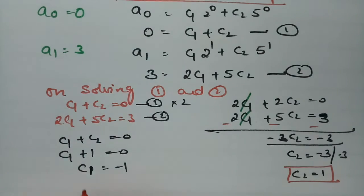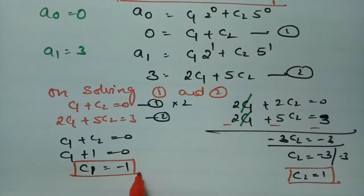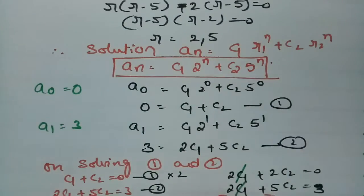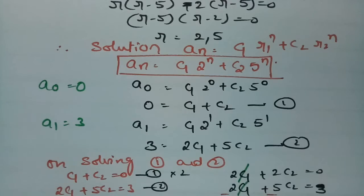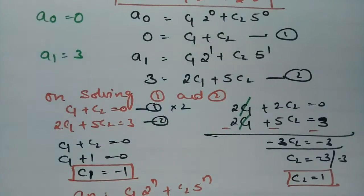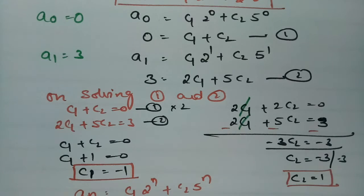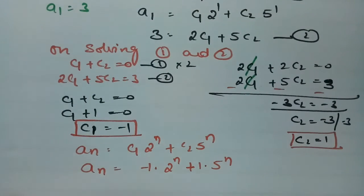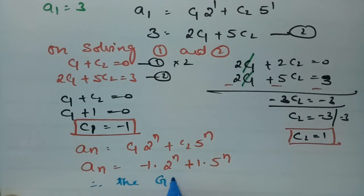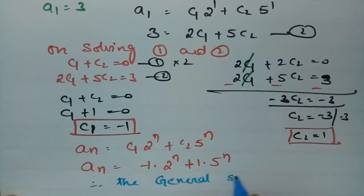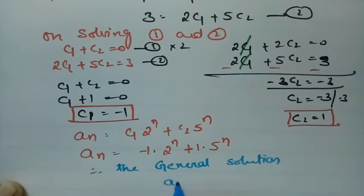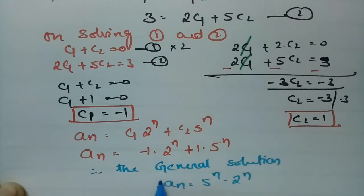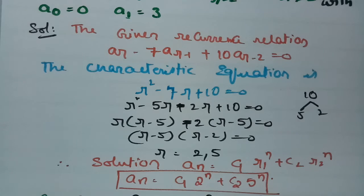We got C1 = -1 and C2 = 1. The general solution is An = C1·2^n + C2·5^n = -1·2^n + 1·5^n. Therefore, the general solution is An = 5^n - 2^n. This is how we solve this type of problem. If you practice, you can definitely solve any problem of this kind.